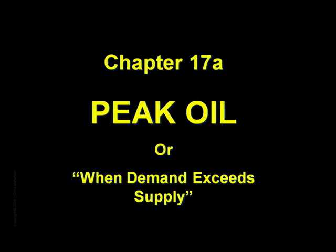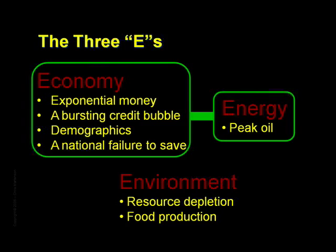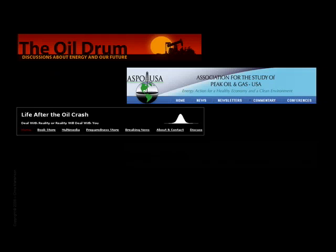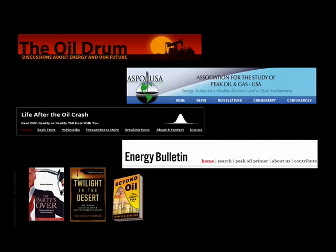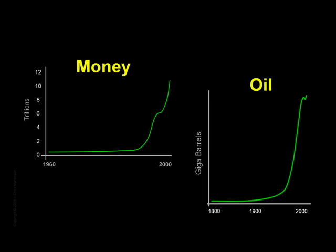We're up to the chapter on peak oil, and this one is a doozy. If you think all the way back to chapter three, I said I was going to connect the three E's, and we are now about to connect the economy to energy. This is one of the most important chapters. Energy is the lifeblood of any economy, but when an economy is based on an exponential debt-based money system and that is based on exponentially increasing energy supplies, the supply of that energy deserves your very highest attention.